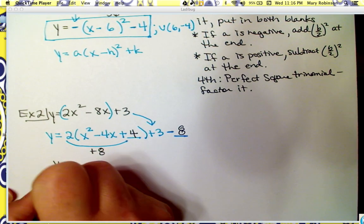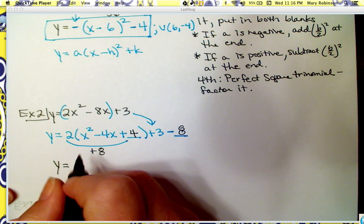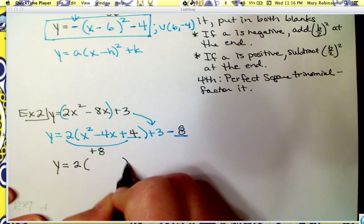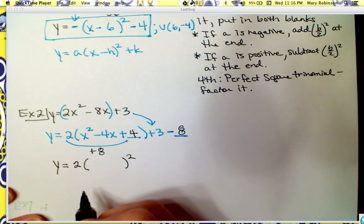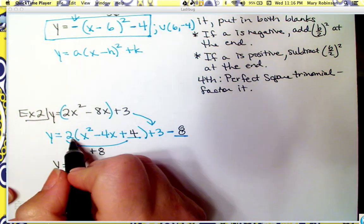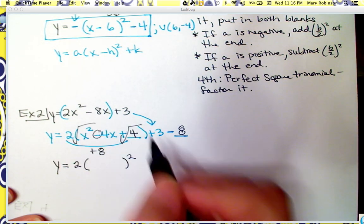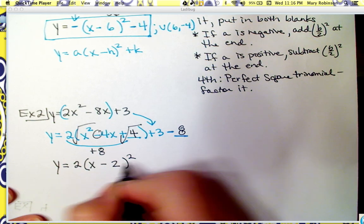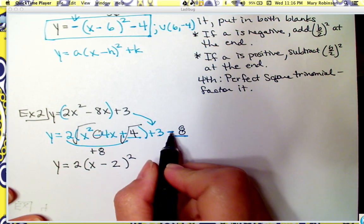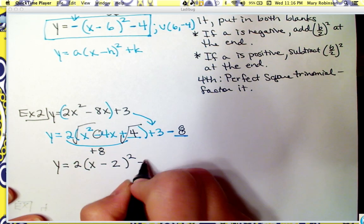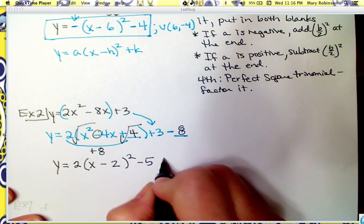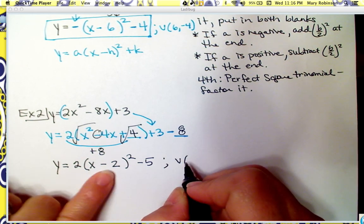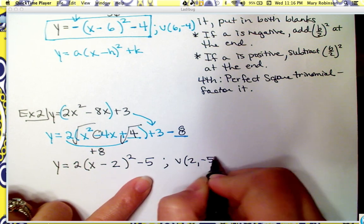We really introduced a positive 8 that was not previously there, so we subtract it at the end. Then simplify and factor: bring down the a value, factor the perfect square trinomial — square root, keep the sign, square root — and simplify. 3 minus 8 is negative 5. So the vertex should be, switch-keep, at (2, negative 5).